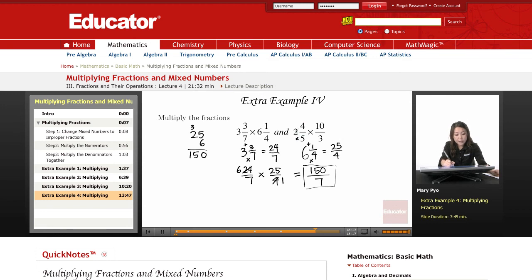Then add the top number, so that's 14. So it'll be 14 over 5 times 10 over 3.